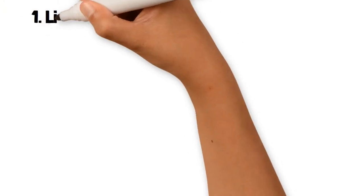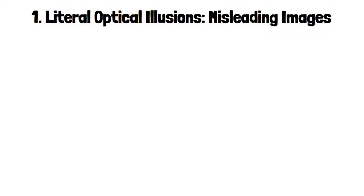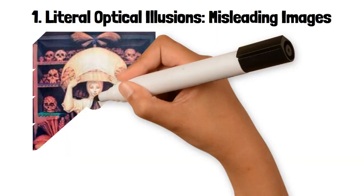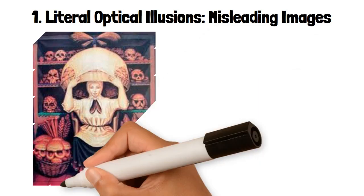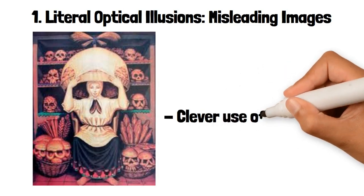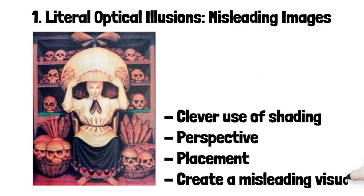1. Literal Optical Illusions: Misleading Images. Literal optical illusions involve images that are created in such a way that they trick the brain into seeing something different from what is actually there. These illusions often involve clever use of shading, perspective, or placement to create a misleading visual.